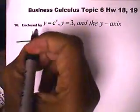This is Calculus, Topic 6, Hormick Problems 18 and 19. We want to find the area that's enclosed by the graph y equals e to the x and y equals 3, and the y-axis. To kind of give a sense of what we're being asked for, let's go ahead and draw this.